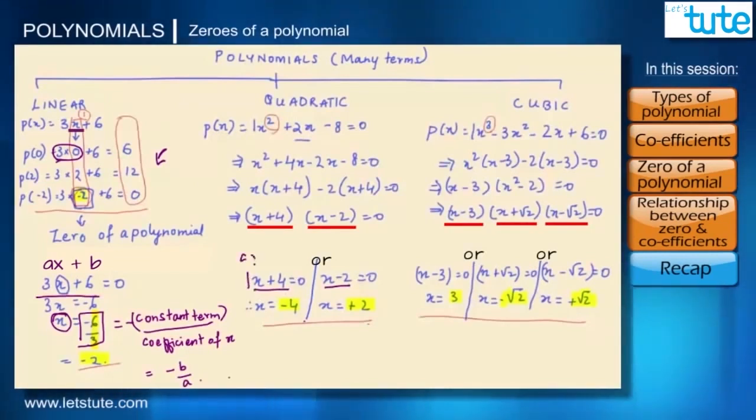We'll first say what is a and what is b. Here 1 would be a and 4 would be b. So ax plus b form and the zeros would be minus b upon a. That is minus of 4 upon 1. So we've got the answer as minus 4. But for a linear polynomial, we could have only one zero.